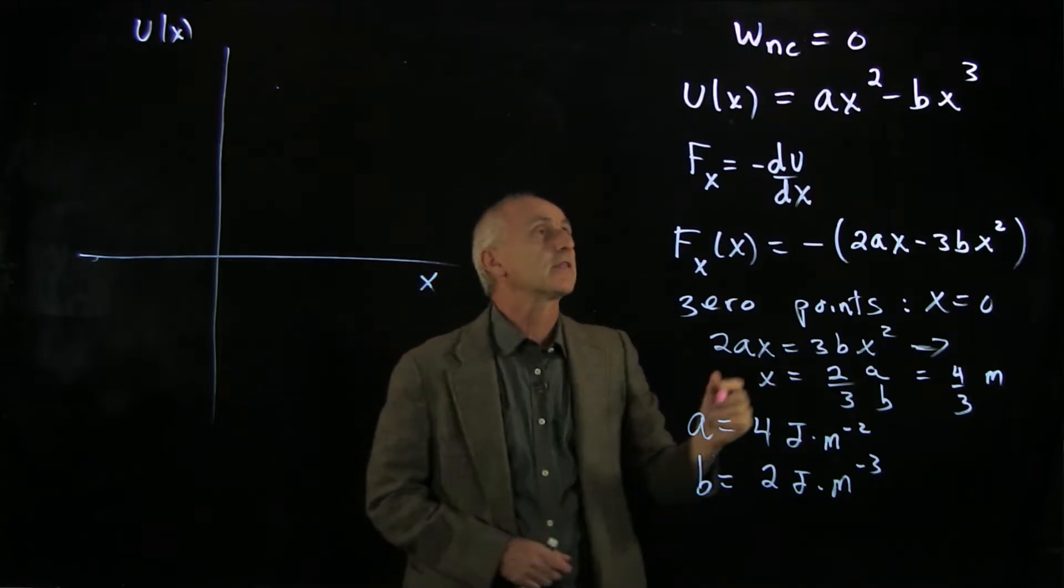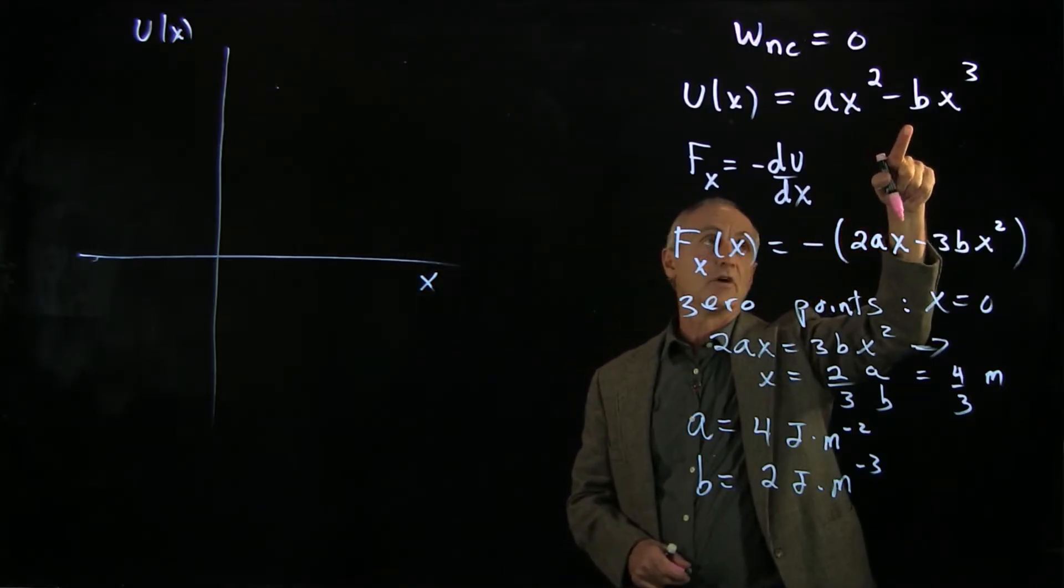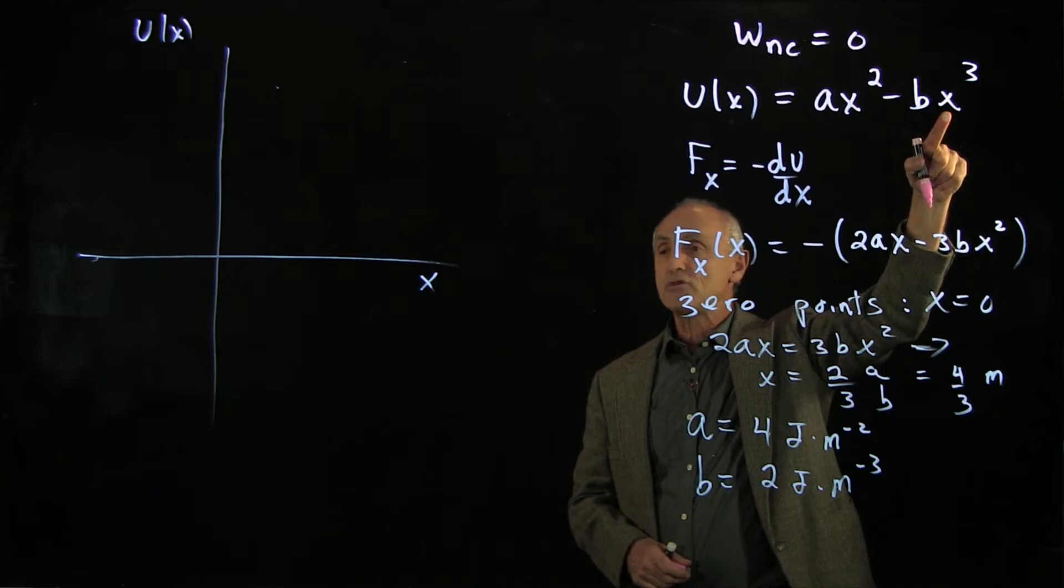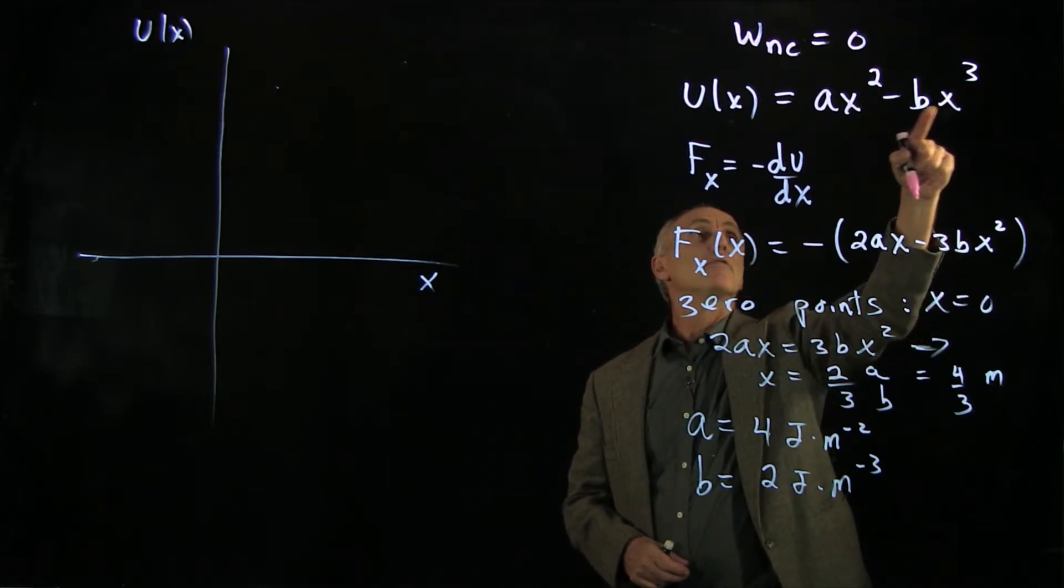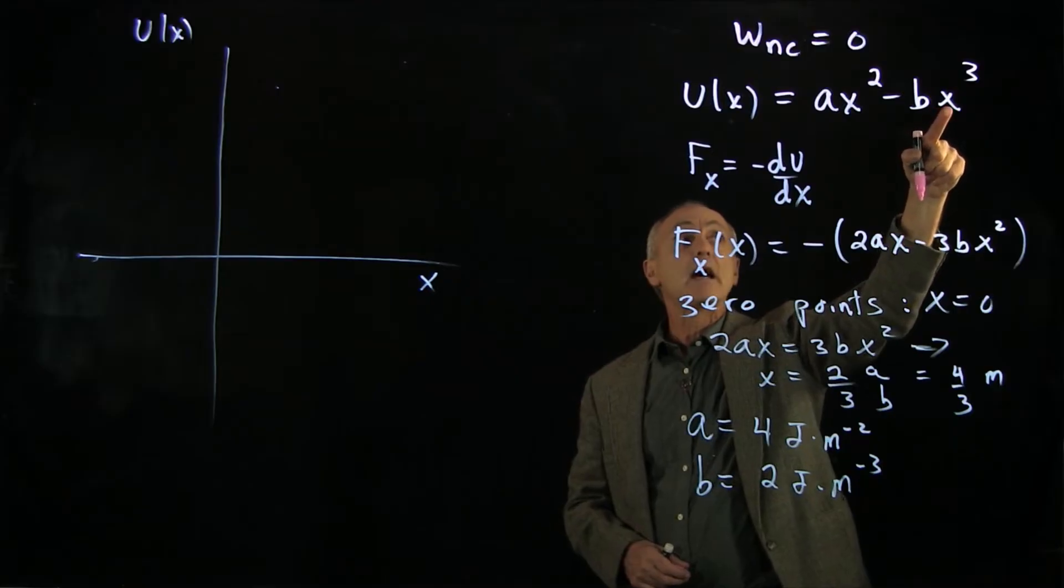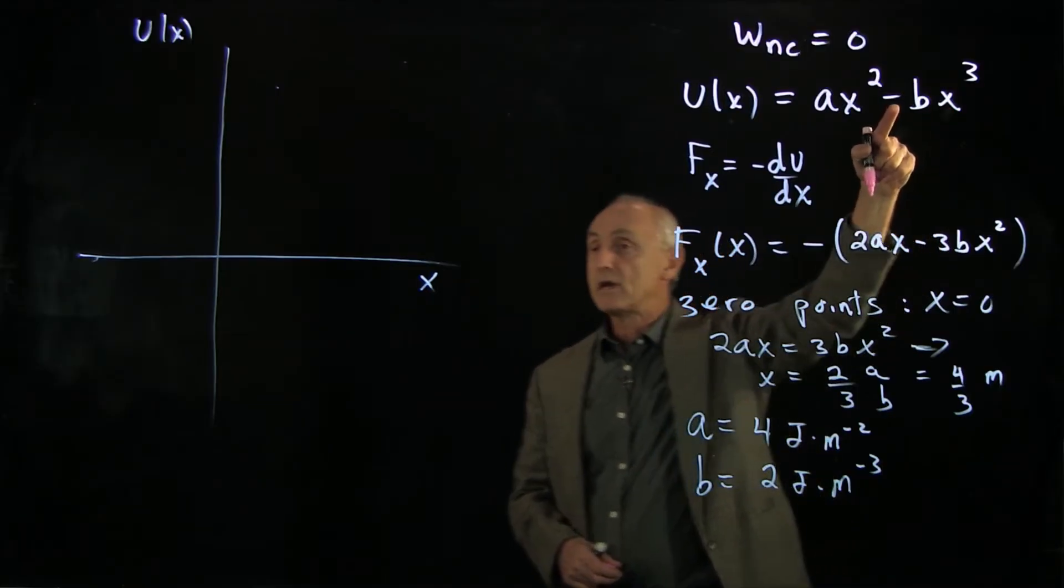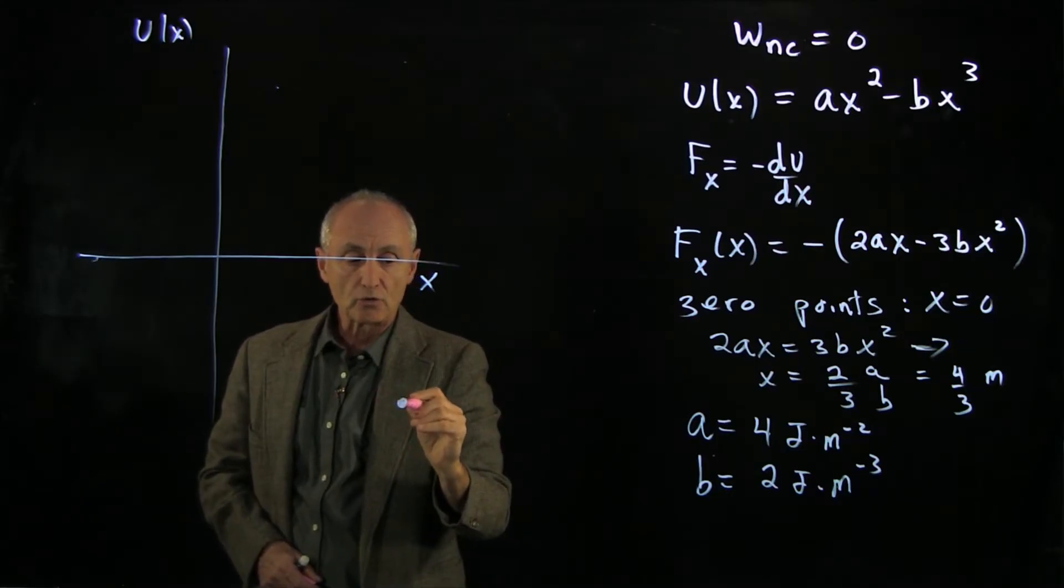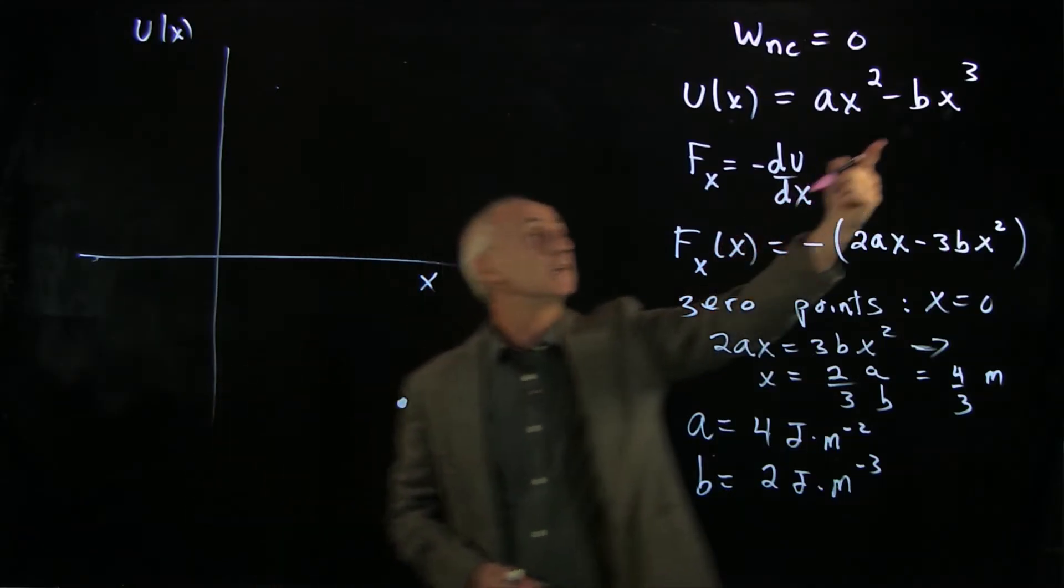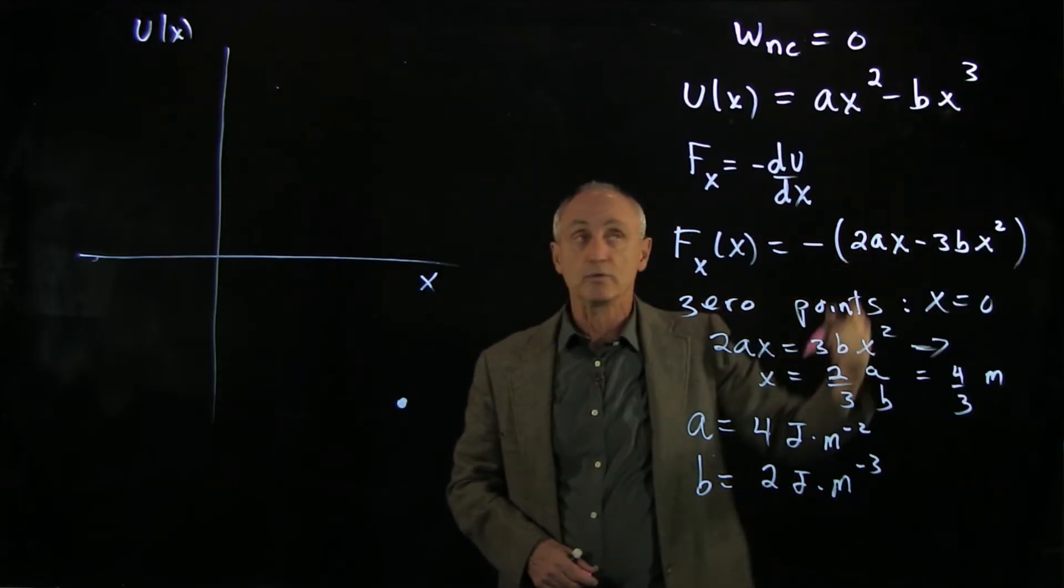To begin with, we want to ask ourselves, how does this function behave? For big values of x, the x³ piece will dominate. If we're at positive x, we dominate with a negative value for potential energy. So our potential energy function goes off into negative infinity as x goes to infinity.